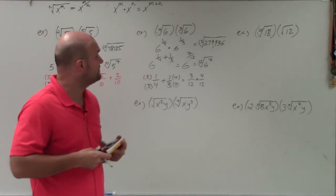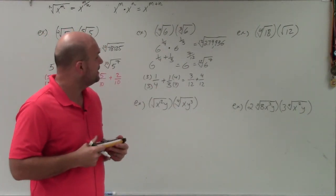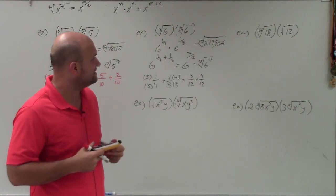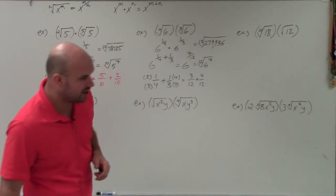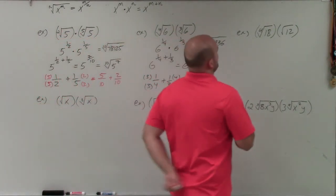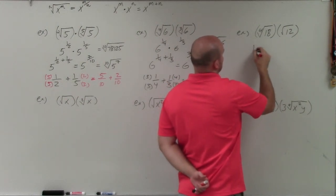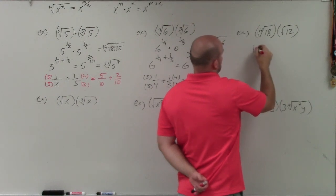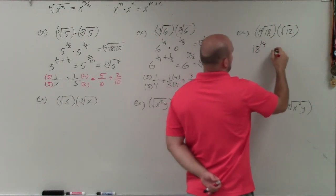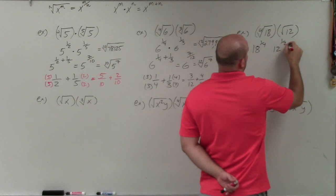In the next one, we have the 4th root of 18 times the square root of 12. So let's see here. Rewrite these as our fractions here. We'll have 18 to the 1 4th power and 12 to the 1 half power.